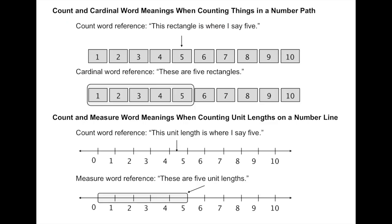This image shows how a number path gives kids a count model instead of a length-based model. It's not to say that a length-based model is bad — kids need it — it's just a little too abstract for our young kids in kindergarten and first grade. That brings me to the second piece: where the number path fits in the CRA model. CRA stands for concrete to representational to abstract.